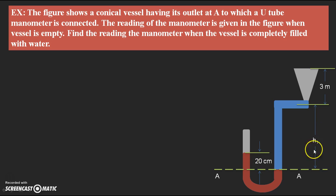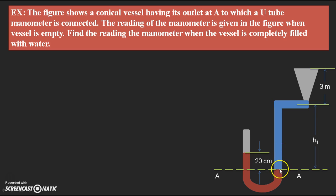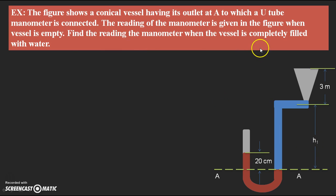In that case we need to find out H1. When we fill the vessel with water, a drop in the mercury level takes place in the right limb of the U-tube manometer. Initially in this problem we try to find the H1 value for finding the manometer reading when the vessel is completely filled with water. So with the empty vessel we try to find H1, and for that I would like to write the given data.